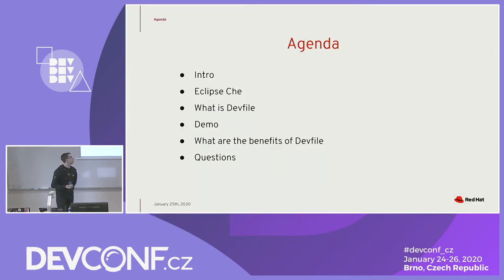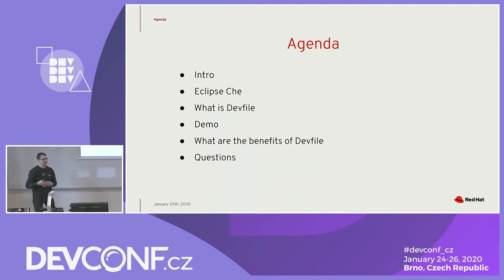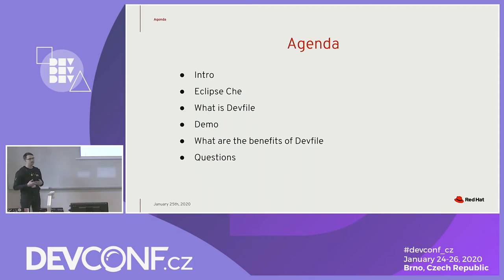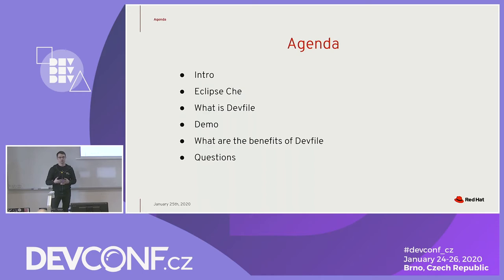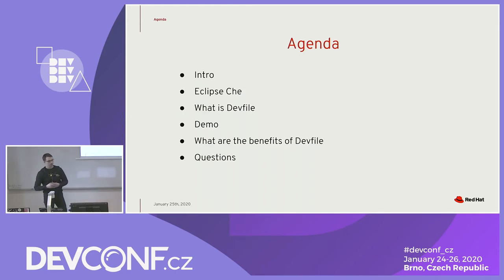In this talk I'm going to explain what Eclipse Che is and which components it has. Then we will see what a devfile is and what structure it has. I also want to demonstrate a small demo where I will change an existing devfile inside Eclipse Che to work with Quarkus samples. I will say a few words about Quarkus, explain what it is, and in the end we will see some benefits of the devfile and why it's good to use it.